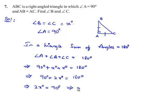That implies x degrees equals 90 divided by 2, which equals 45 degrees. Therefore, angle B equals angle C equals 45 degrees, which is the required answer.